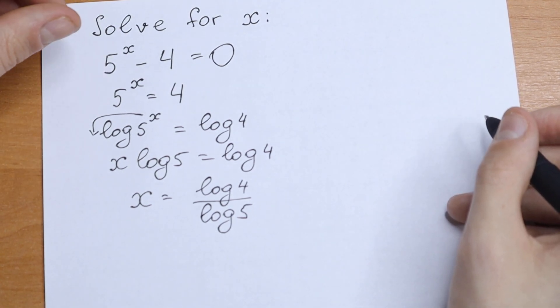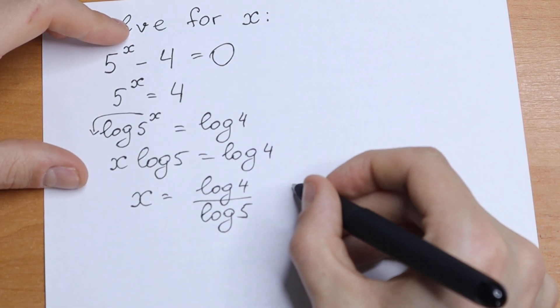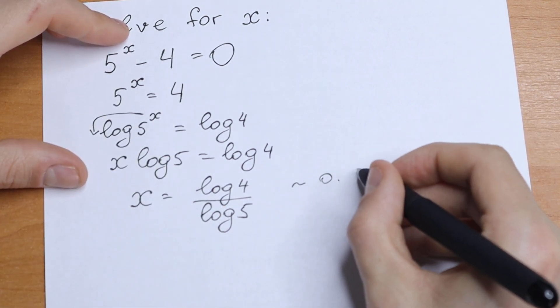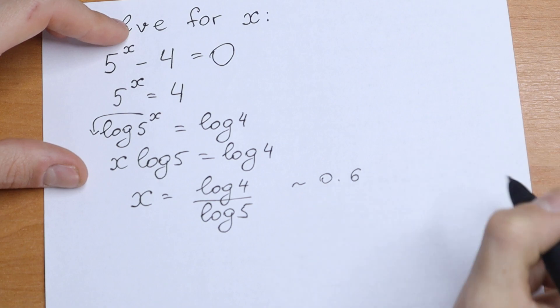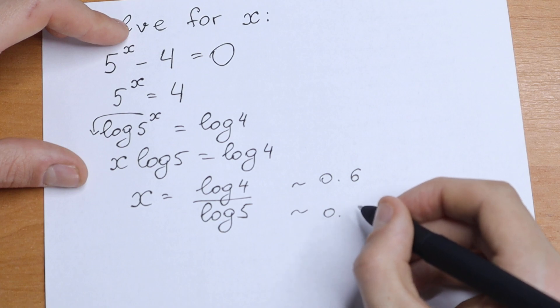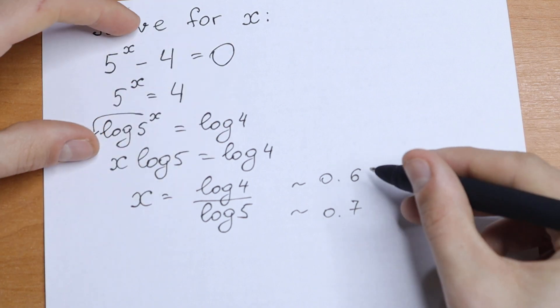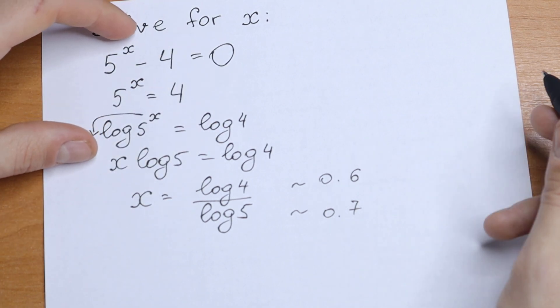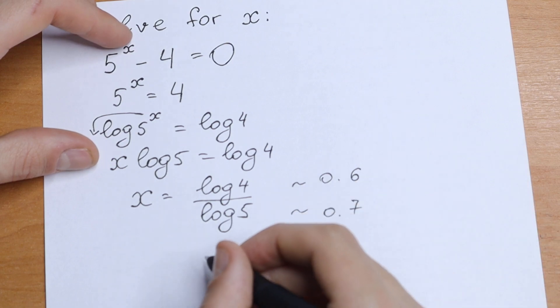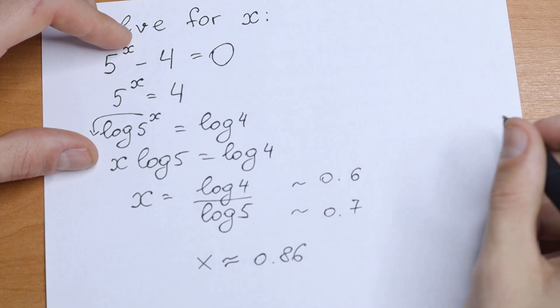And let's find this answer approximately. So what will we have? Our log 4 is approximately equal to 0.6. And on the denominator, we will have approximately 0.7. And if we divide 0.6 by 0.7, we will have our answer that x is approximately equal to 0.86.